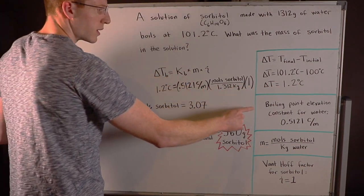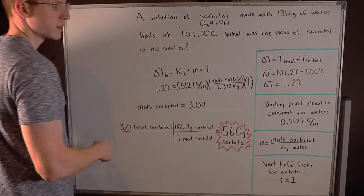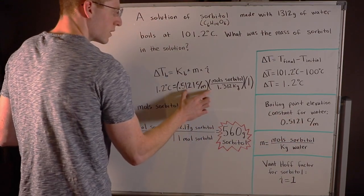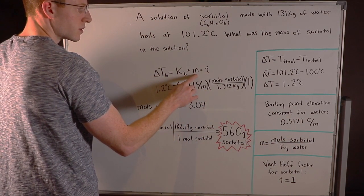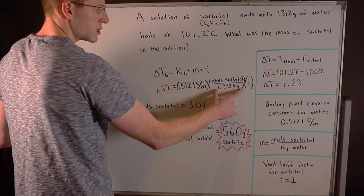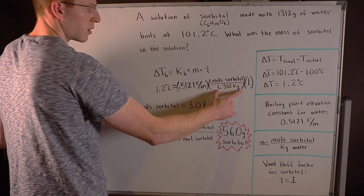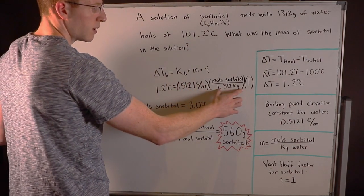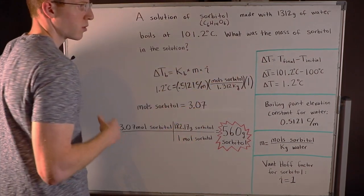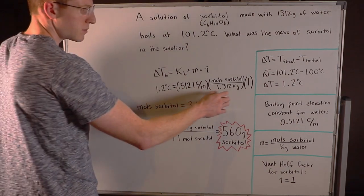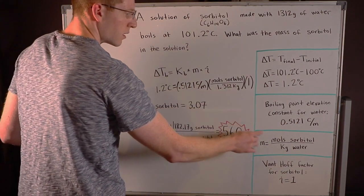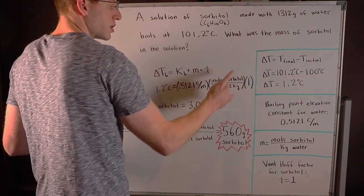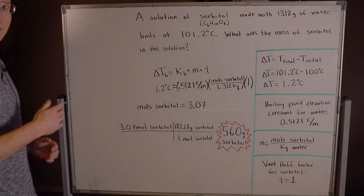Kb is the boiling point elevation constant for water, and you can find this on a table. It's 0.5121°C per molal, times the molality of the solution. Notice how this is going to give us the moles of sorbitol, so we'll have to find the mass of sorbitol at the end. We can get moles of sorbitol directly, but we'll have to do a little bit more work for the actual mass in grams of sorbitol per kilogram of water. This is the molality of the solution, and we were given grams of water, so I changed that to kilograms of water by dividing by a thousand.